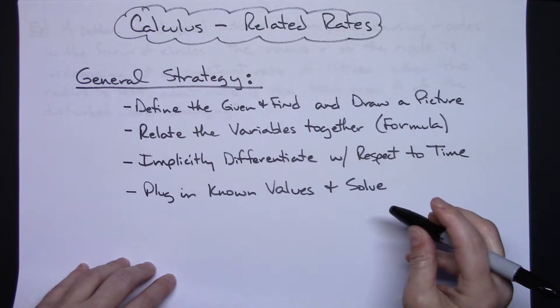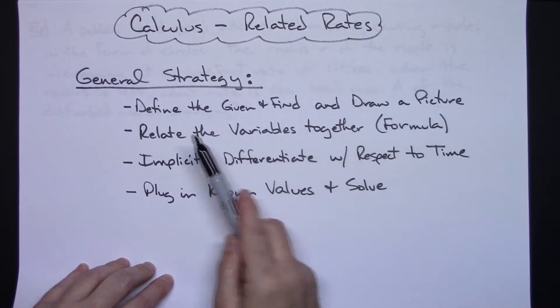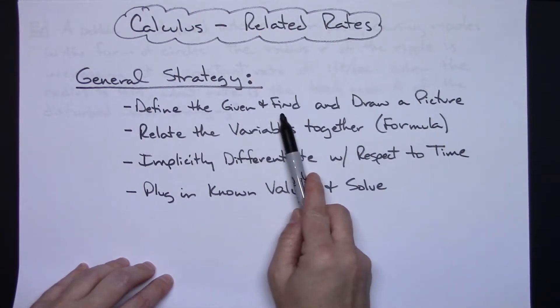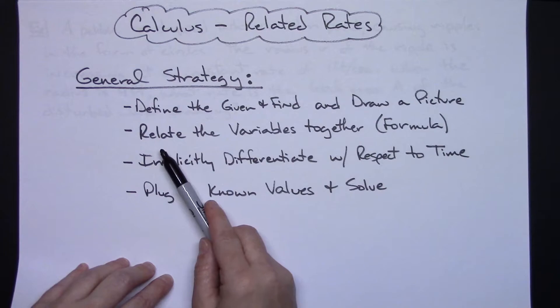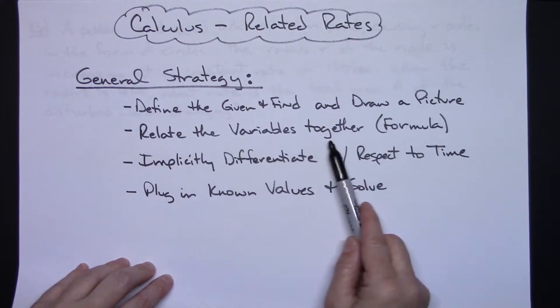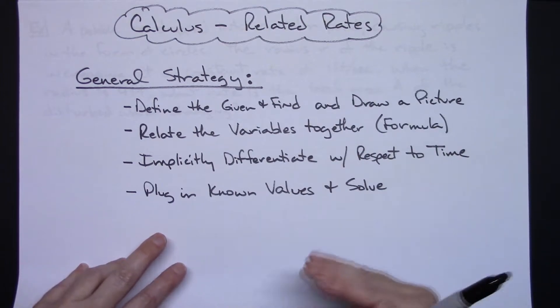Every time I work out a related rates problem I have a general strategy that I attempt to follow. I define the given and the find from the story problem and if possible I try to draw a picture. Then I relate the variables together. So kind of figure out well what's it asking for, what's it given.